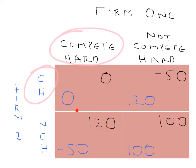This compete hard outcome is great for consumers, so there are laws in place to prevent businesses from avoiding competition. Businesses are not allowed to enter agreements or contracts where they agree not to compete hard — that breaches competition laws in most countries. The businesses would like those contracts because it would allow them to trust each other, but those contracts are not enforceable in a court of law, and so the temptation to compete takes over.